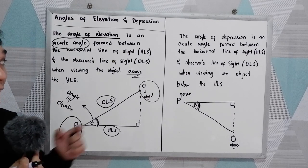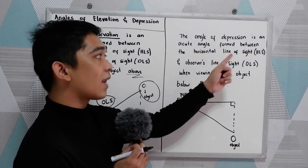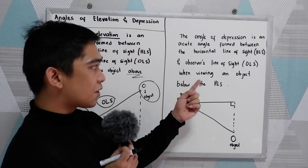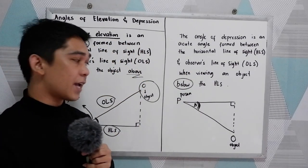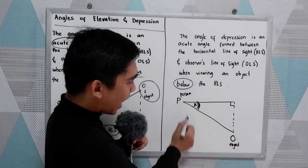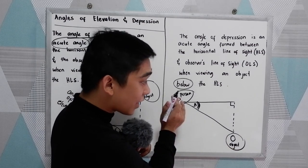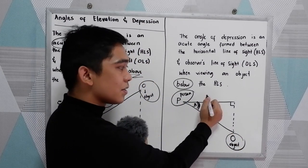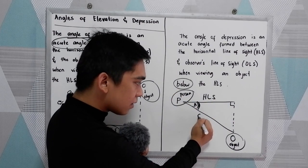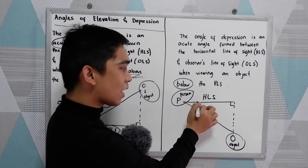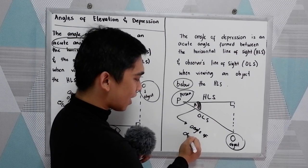Now we have the angle of depression. It is an acute angle formed between the horizontal line of sight and the observer's line of sight when viewing an object below the horizontal line of sight. In this figure, the object is located below the observer. The horizontal line of sight and the person's line of sight form an acute angle — this is what we call the angle of depression.